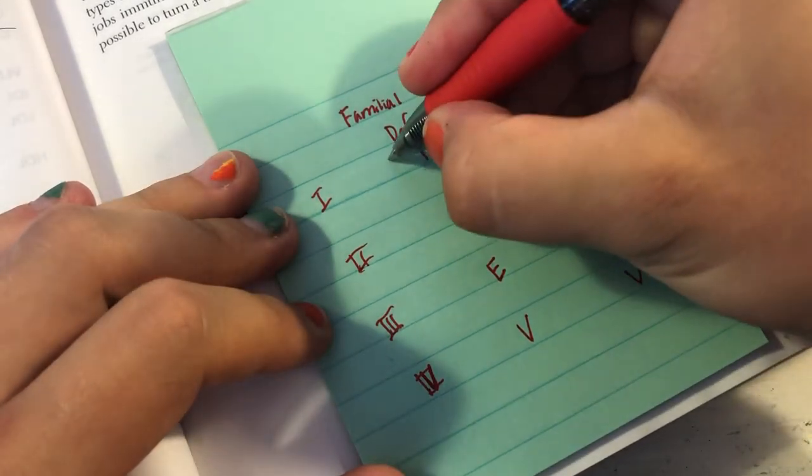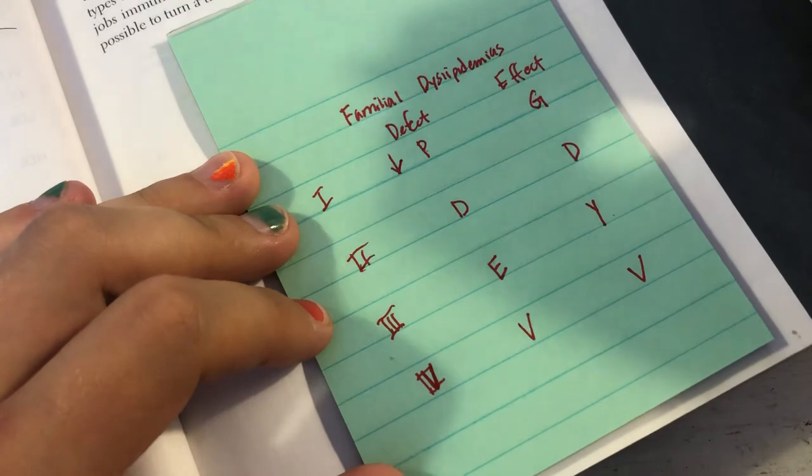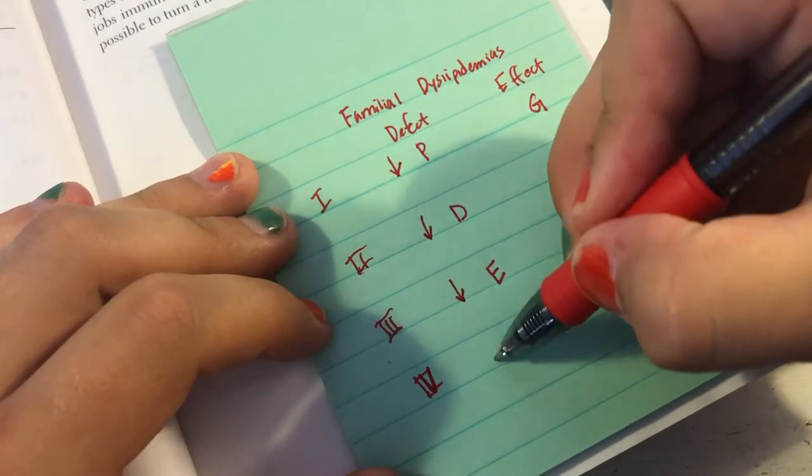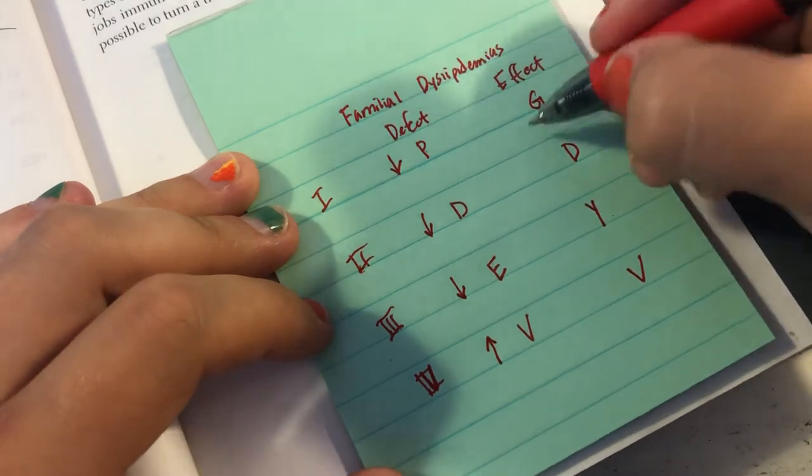So the defect will always have a down arrow except for the last one and then the result for the effects will always have an up arrow.